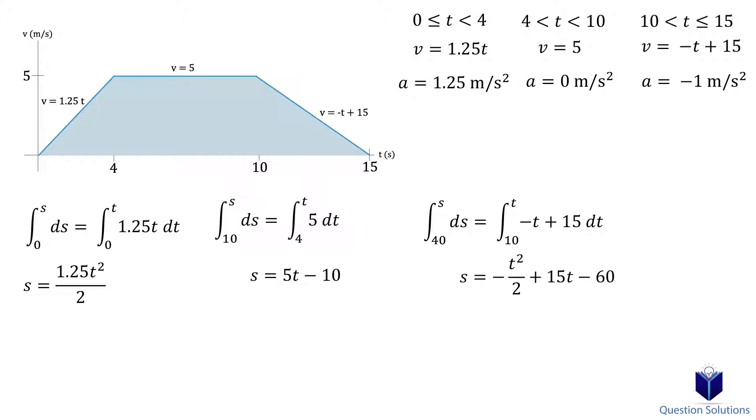To find the displacement at 8 seconds, we will use the middle segment equation. Substituting gives us 30 meters. To find the displacement at 12 seconds, we need to use the last segment equation which gives us 48 meters.